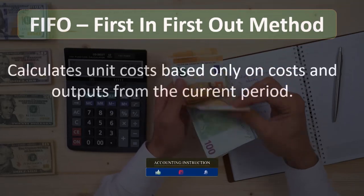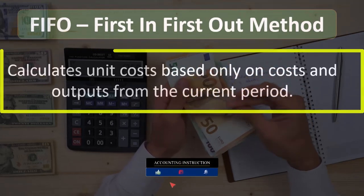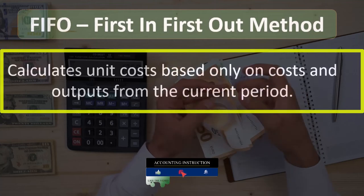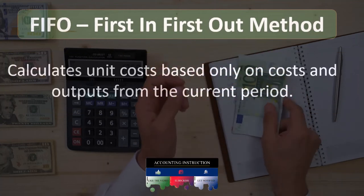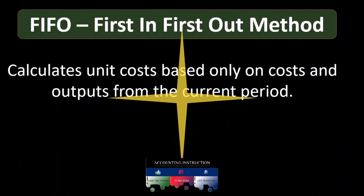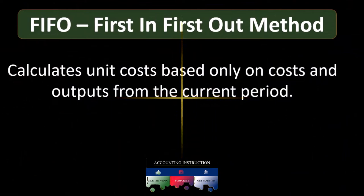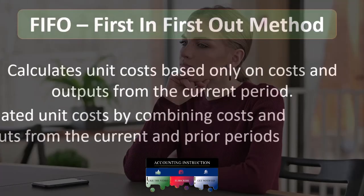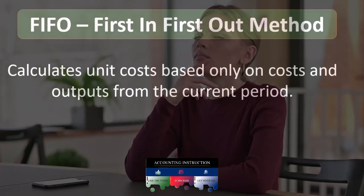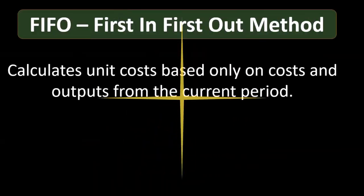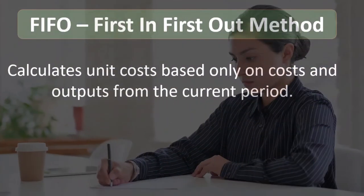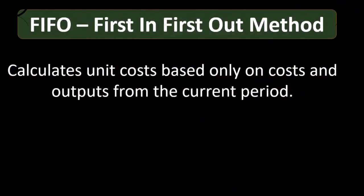The first in first out method calculates unit cost based only on costs and output from the current period — applying current period costs using a FIFO assumption. Our comprehensive problem will use the first in first out method, while our example problems and illustrations will use the weighted average method.